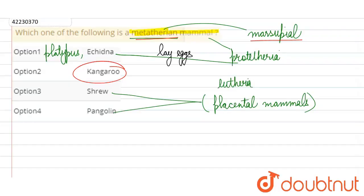Here we have Metatherian or Marsupial mammals. Given the options, echidna is Prototherian. Shrew and Pangolin are Eutherian or placental mammals. Then Metatherian or Marsupial - the right answer is Kangaroo.